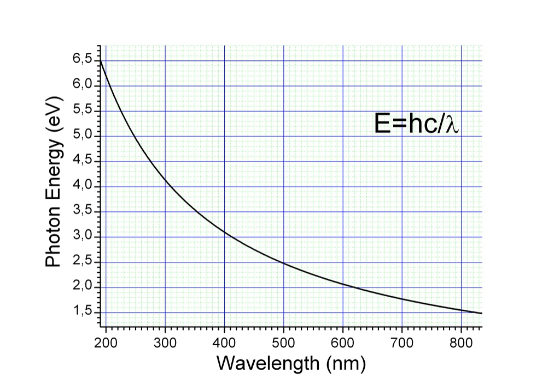An electronvolt is the amount of energy gained by the charge of a single electron moving across an electric potential difference of 1 V.